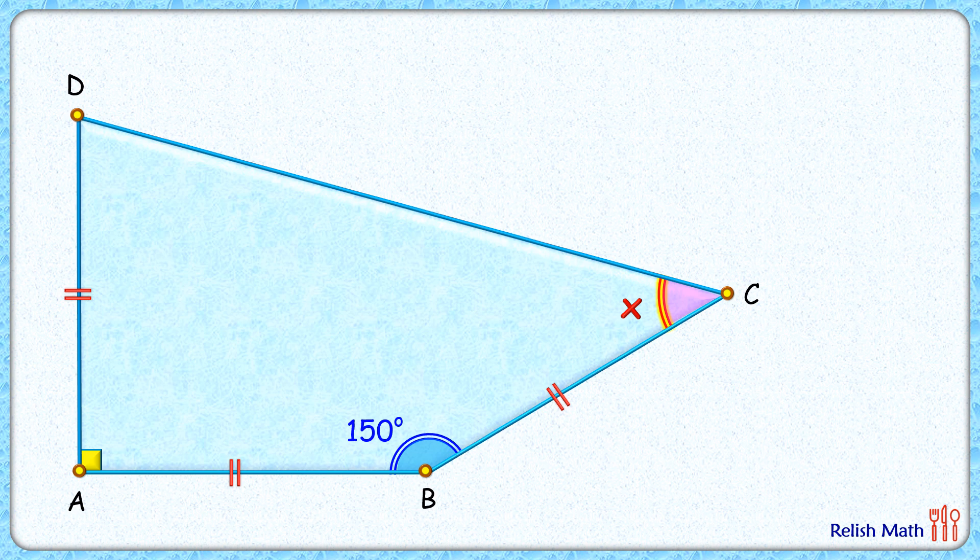So to start with, let's first draw a square with DA and AB as two of its sides. For that, we are drawing perpendicular from point B and from point D, meeting at point E here.